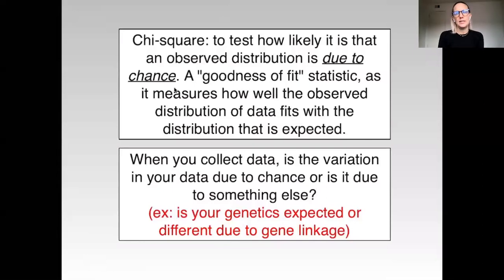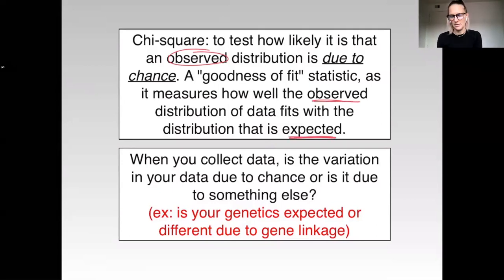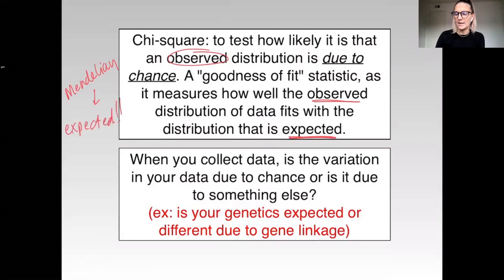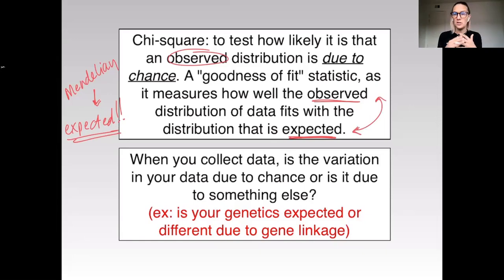The chi-square is used to test how likely it is that an observed distribution is due to chance. In other words, it's a goodness of fit statistic, so it measures how well your observed distribution matches what is expected. With Mendelian genetics, we can do predictions on what numbers would be expected using our Punnett squares, and then compare that to what we actually observed in a cross and ask whether that is due to chance or is it actually quite different.